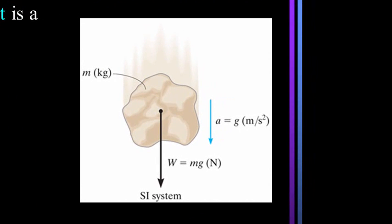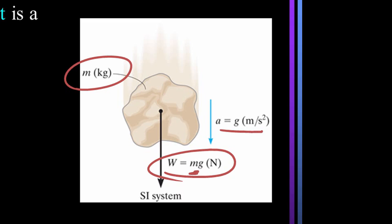In SI system of units, the mass is a base unit, and it has units of kilograms. Weight is a derived unit. It is mass times g, acceleration due to gravity, which is 9.81 meters per second squared in this system.